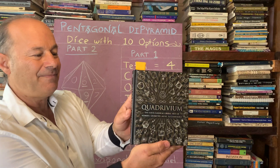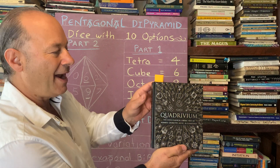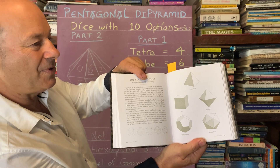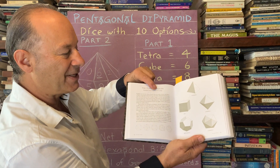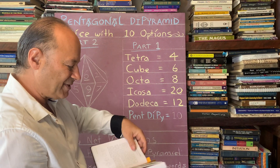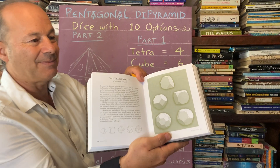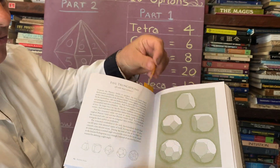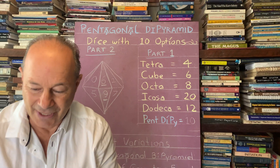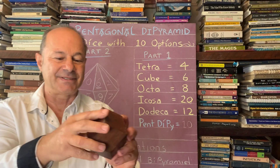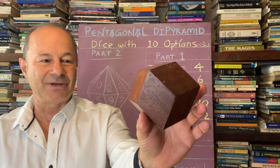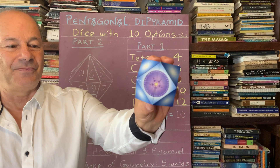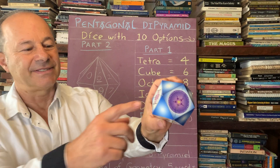There's a great book called Quadrivium, full of sacred geometry, which shows the five platonic solids. Beyond those, there are 13 Archimedean shapes — called semi-regular because they have different face types, like a soccer ball with pentagons and hexagons. One Archimedean shape with 12 diamond faces also gives 12 options, and another gives 24.